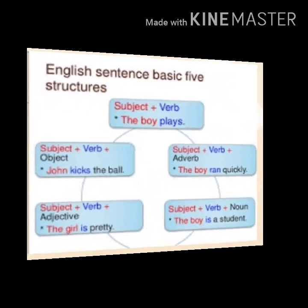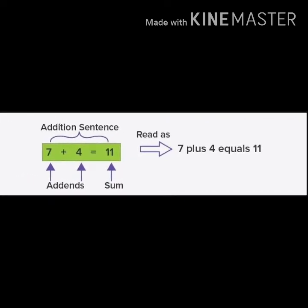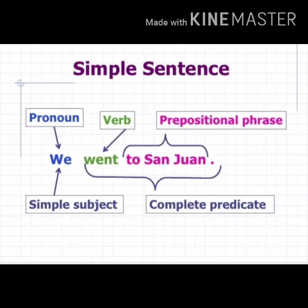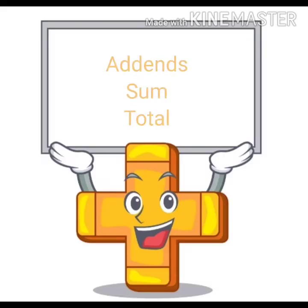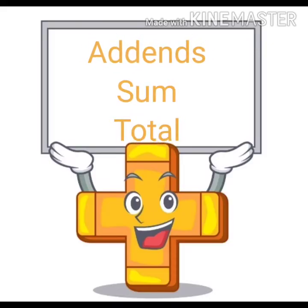Just as in English, with the help of some words, we form a sentence — same like in maths, with the help of digits and basic operations, we form an addition sentence. In an English sentence there are different parts of speech like verb, object, subject, adjective, adverb, etc. Same like this, in maths, in an addition sentence, we have addends and sum.